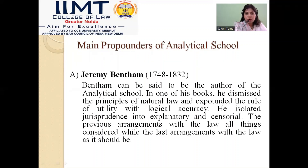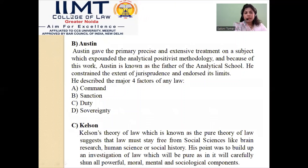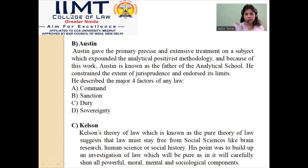The second propounder was Austin. Austin was the most famous propounder of the school and gave the primary, precise, and extensive treatment on the subject, expounding the analytical positivist methodology. Because of this work, Austin is known as the father of the analytical school. He constrained the extent of jurisprudence because he equated it with science. He described four main features: command, sanction, duty, and sovereignty.